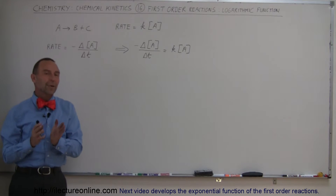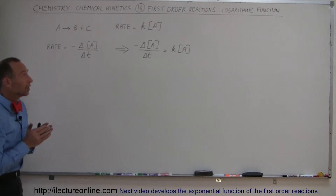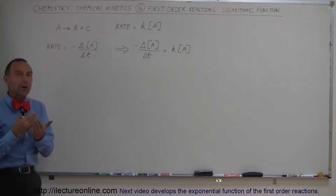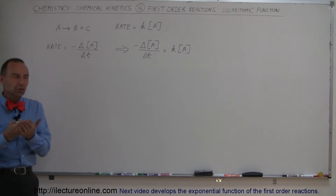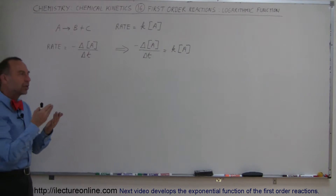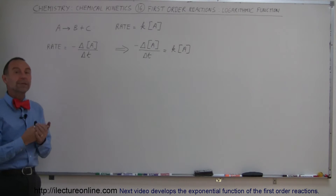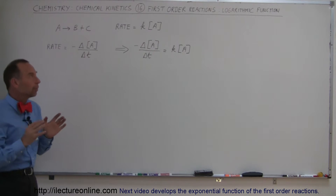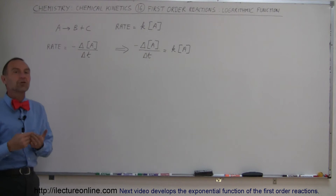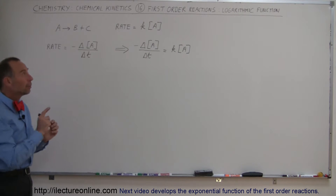Welcome to ElectronLine. We're going to take a look at how we can come up with an equation — a function — that will relate the constant K, time, and the concentration of the reactant. We're going to start simple, starting with what we call a first-order reaction only. We'll deal with second-order reactions later.